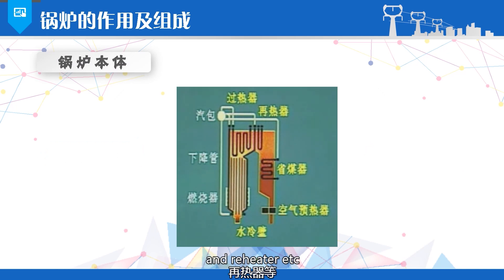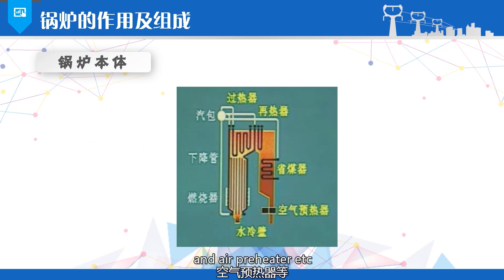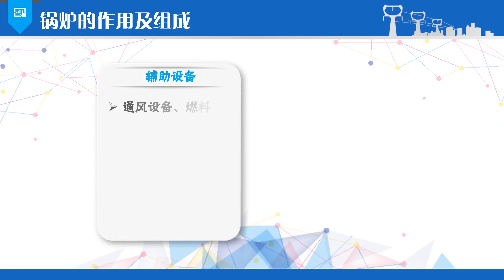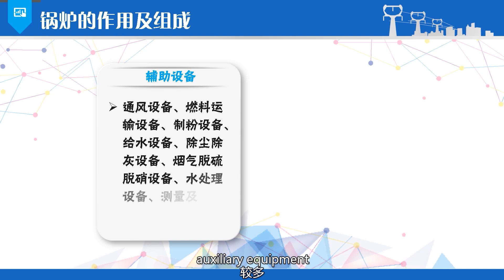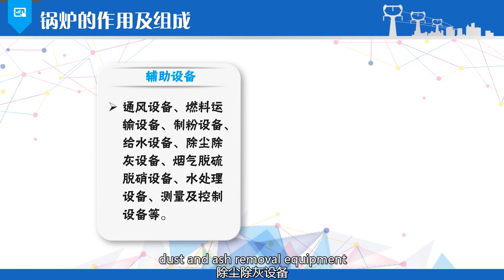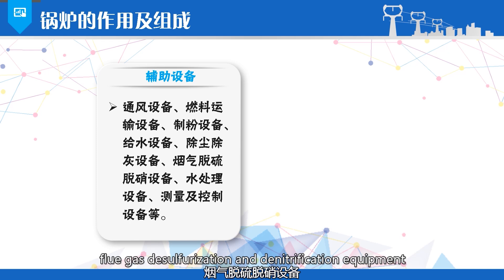The economizer, steam drum, downcomer tubes, water-cooled walls, superheater, and reheater form the pressure part of the boiler, while the furnace, flue ducts, burners, and air preheater form the combustion part of the boiler. Additionally, the boiler body also includes the furnace wall and the structure. Power station boilers have a considerable number of auxiliary equipment, which mainly include ventilation equipment, fuel transportation equipment, pulverizing equipment, and feed water equipment.